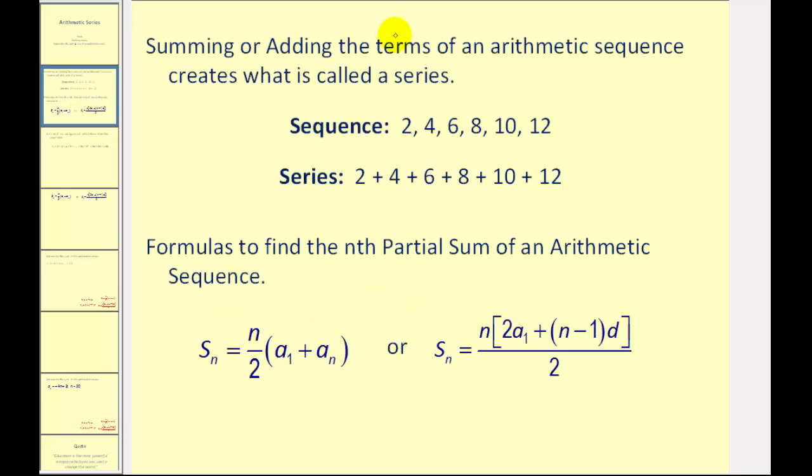The summing or adding of the terms in an arithmetic sequence creates what is called a series. So a sequence is a list of terms and a series is a sum of terms. And these are the formulas that we can use to find the nth partial sum of an arithmetic sequence.